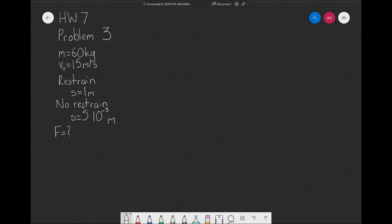which is 5 times 10 to the negative 3 m, which is right here. And the problem asks for the two different forces that need to be applied to the person's body for it to stop.